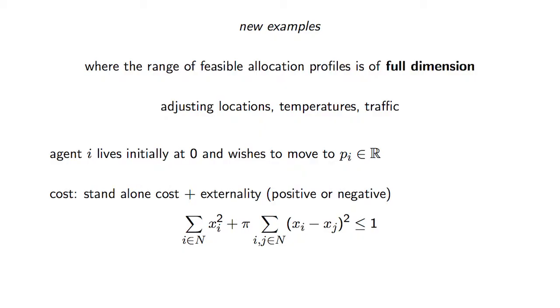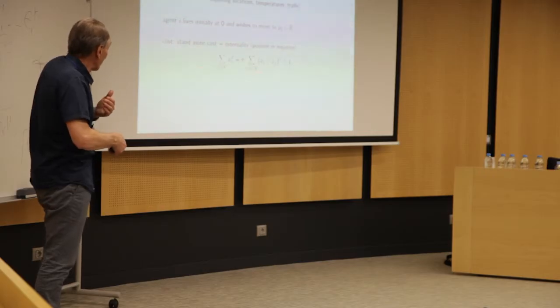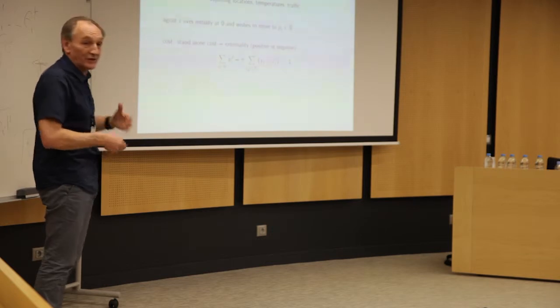And there is two parts to the cost. Your own standalone cost to move from zero to x_i is x_i square. But then there is an externality effect, which is that when you put two people close by, it either creates economies of cost or additional cost. For values, you can easily find the different interpretations.